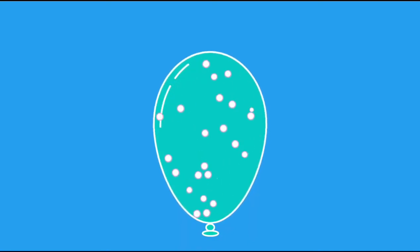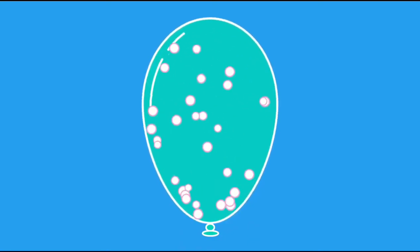We also see the effect of pressure in gases when we blow a balloon up too much, and it pops. This is because we've increased the pressure of the air molecules pushing against the rubber balloon too much.